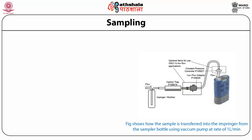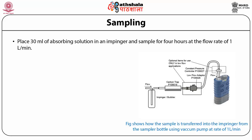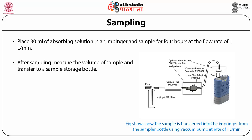For sampling, place 30 mL of the absorbing solution in an impinger and sample for 4 hours at a flow rate of 1 liter per minute. After sampling, measure the volume of the sample and transfer it to a sample storage bottle. Air entering the impinger passes through a carbon trap which absorbs impurities, and the sulfur oxide is captured by the absorbing media before being transferred to the storage bottle.